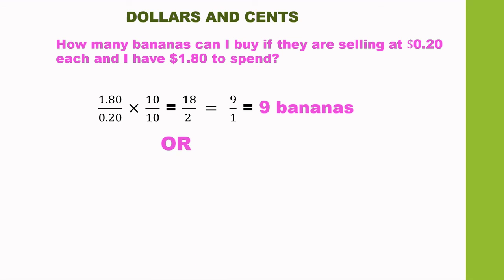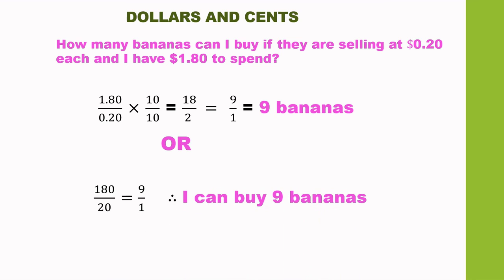Another way is to convert both figures to cents. So we are going to work with 180 over 20. 20 into 180 gives you 9. Therefore, I can buy 9 bananas.